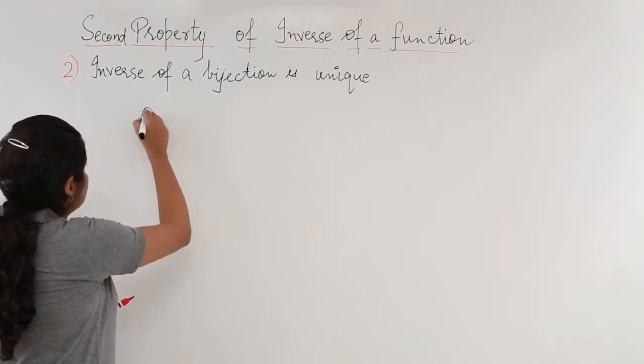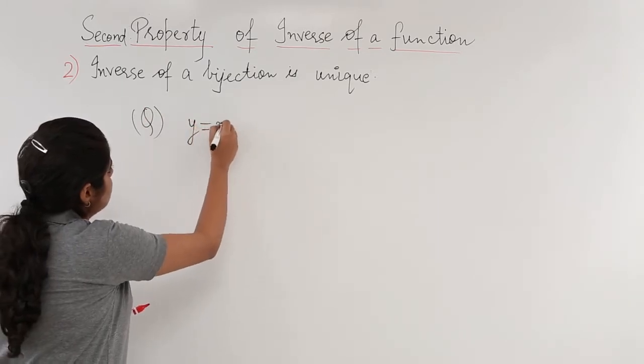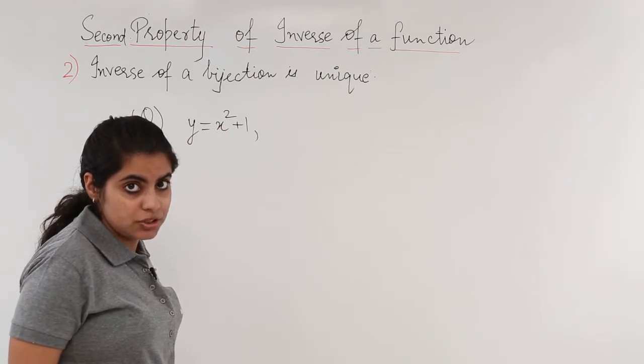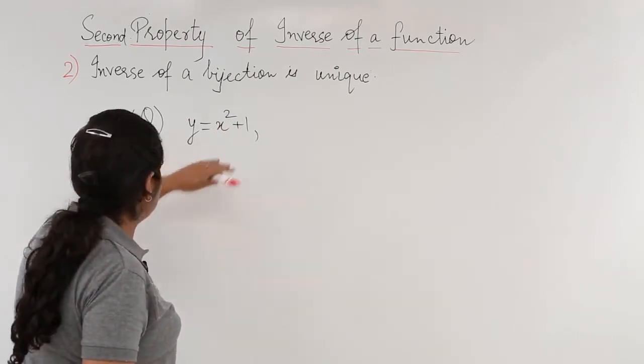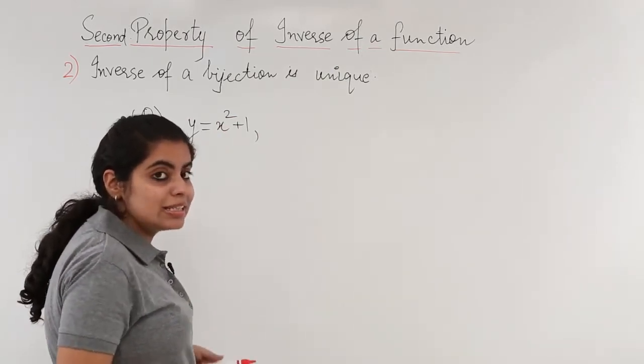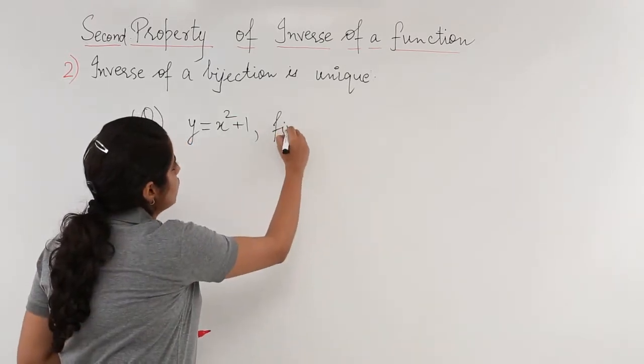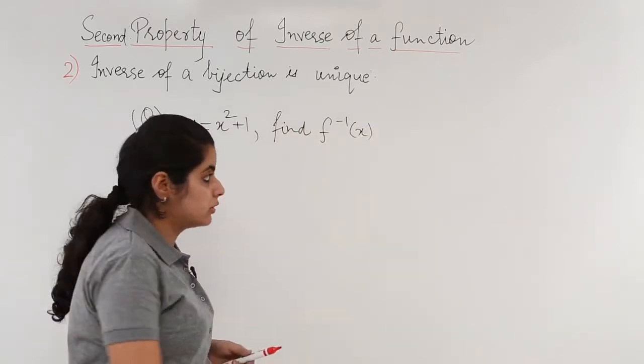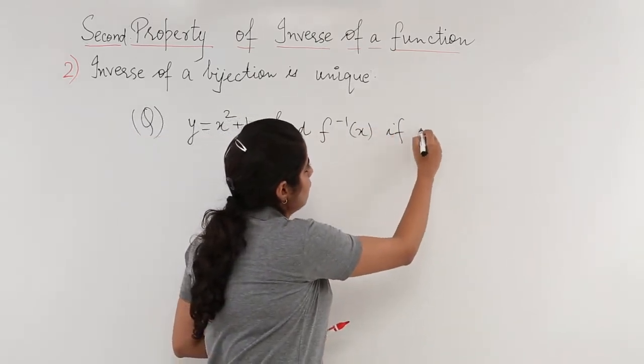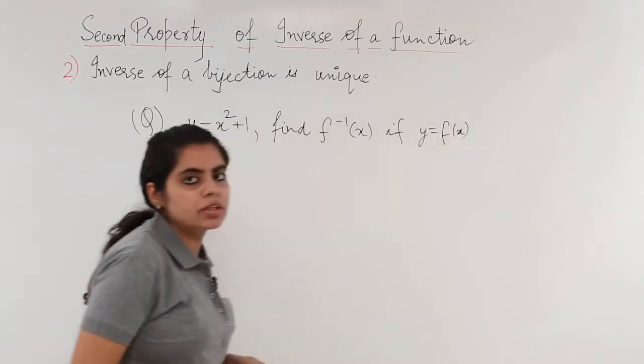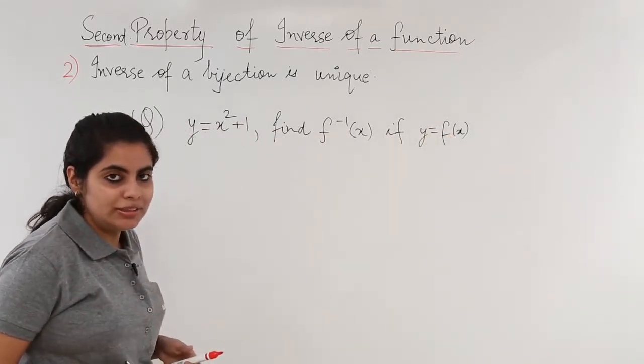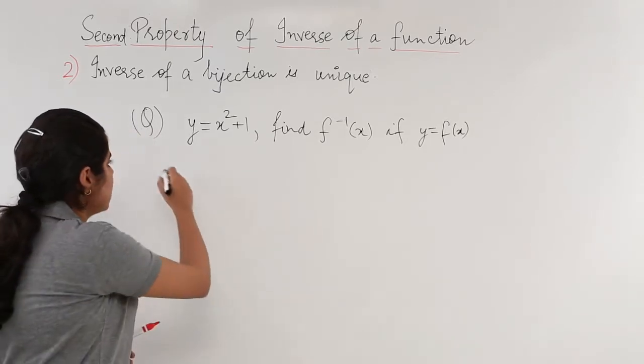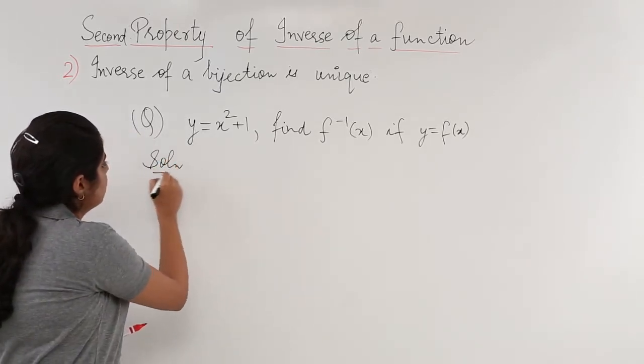The question given to me is a function y which is equal to x square plus 1. The function that I have been given is x square plus 1. What is needed? You are supposed to find f inverse of x if y is equal to fx. So the question tells me that y is equal to fx and I need to find what is the f inverse of x. Let's see how to do the problem.